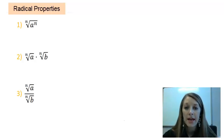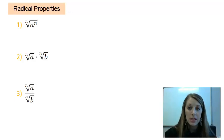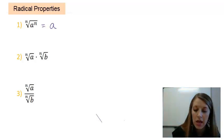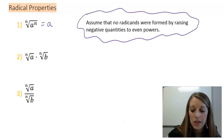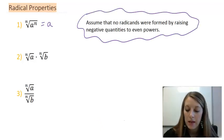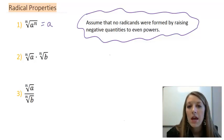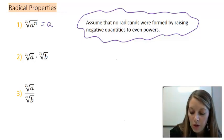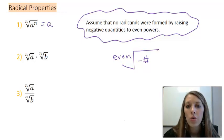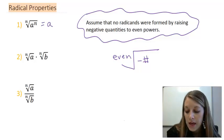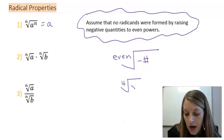Starting with property number 1, the nth root of a to the nth power. We've already seen this, and this works out to be just a on the inside. Now all of your homework problems will have something similar to this statement here. Assume that no radicands, which is just plural for radicals, were formed by raising negative quantities to even powers. And that is to help cover the situations of when you have an even root of a negative number, which we saw earlier will not come out to be a real answer.